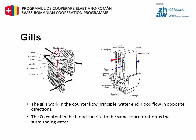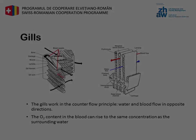One is the unidirectional flow of water through their gills, which avoids inefficient mixing of fresh air with expired air. The second is the counter-flow principle, where water and blood flow in opposite directions, ensuring maximum gas exchange. In this way, the O2 content in the blood can rise to the same concentration as the surrounding water.